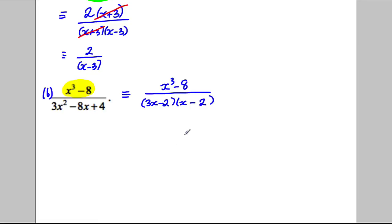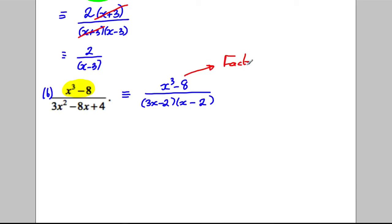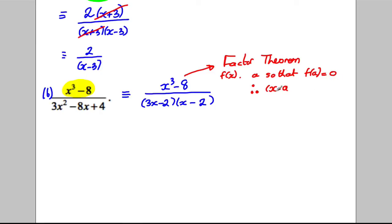There's clearly going to be some simplification — the denominator has a factor of (x - 2), so the numerator x³ - 8 likely also has a factor of (x - 2). You should know the factor theorem: if you have a function f(x) and you can find a number a such that f(a) = 0, then (x - a) is a factor.